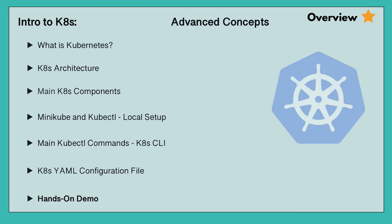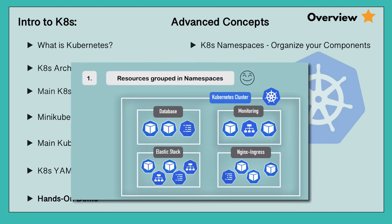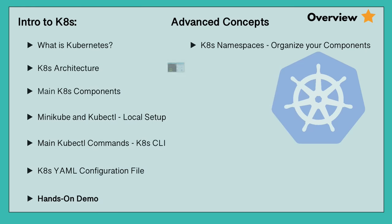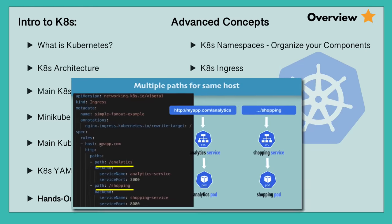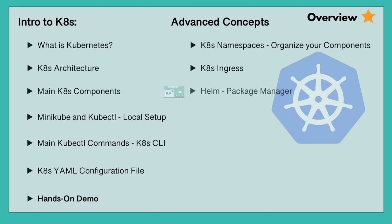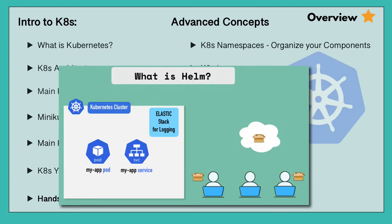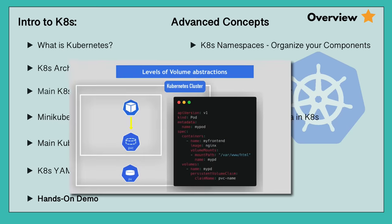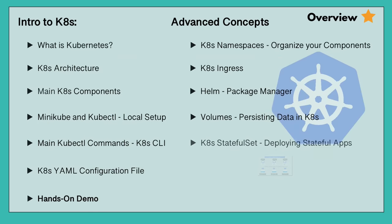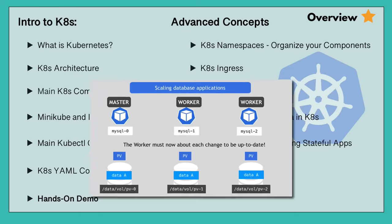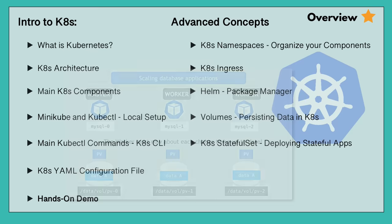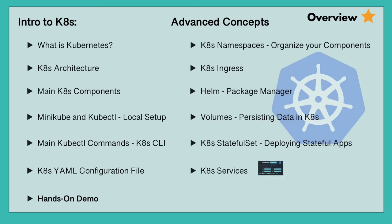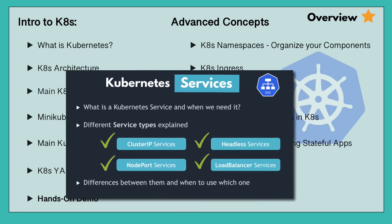In the second part, we will go into more advanced and important concepts like organizing your components using namespaces, how to make your app available from outside using Kubernetes ingress, and learn about Helm, which is the package manager for Kubernetes. In addition, we will look at three components in more detail: how to persist data in Kubernetes using volumes, how to deploy stateful applications like databases using the stateful set component, and the different Kubernetes service types for different use cases.